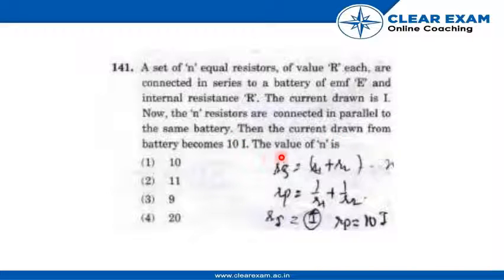Then the current drawn from the battery becomes 10I. The value of n is: 10, 11, 9, or 20. Let's see what is the correct answer.